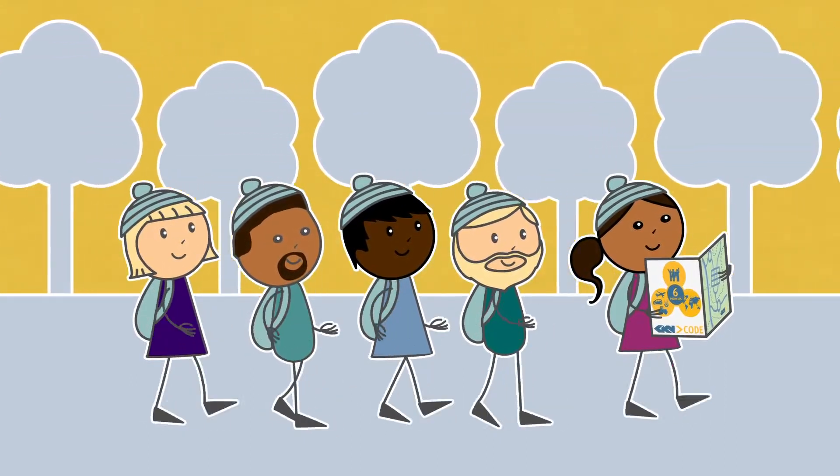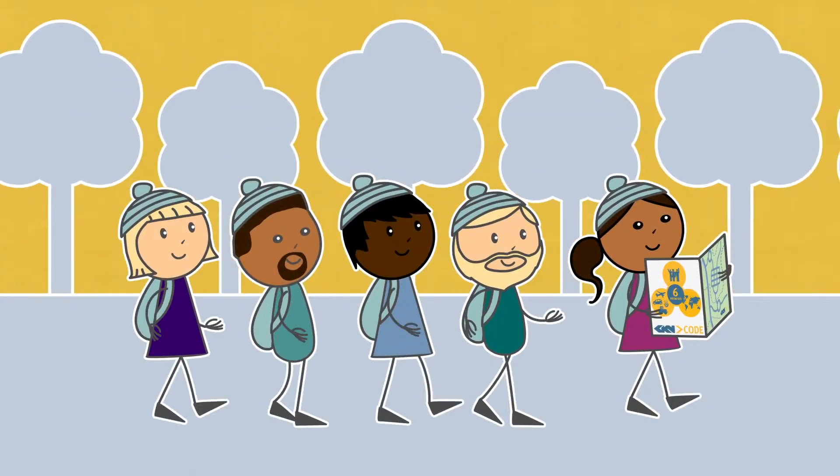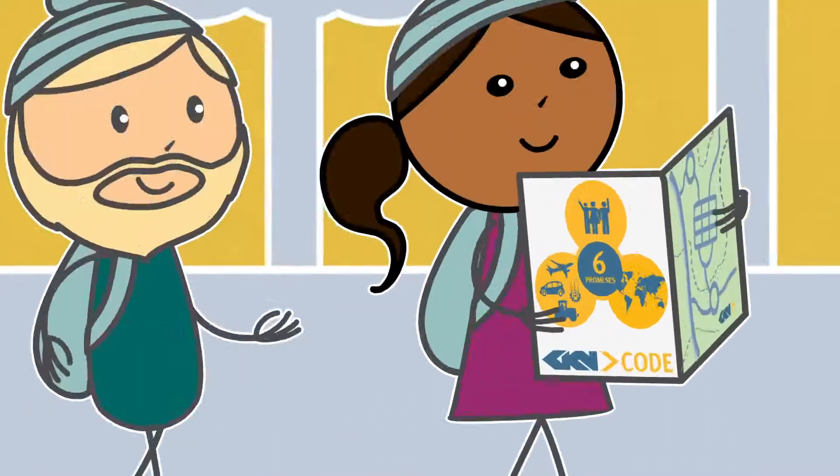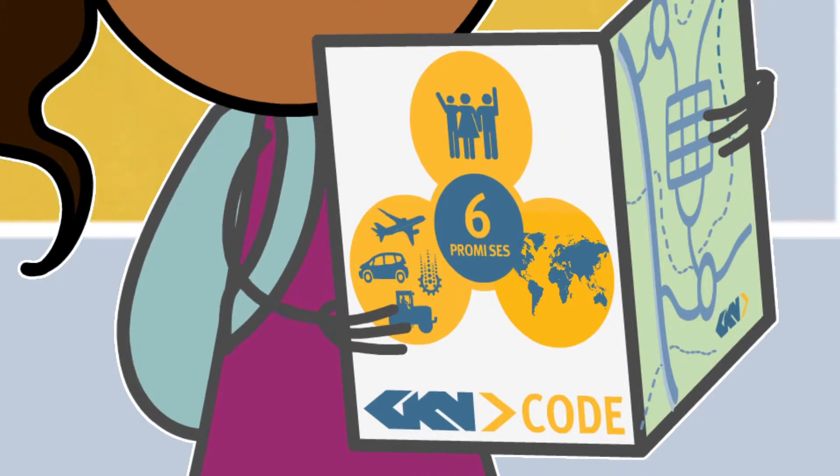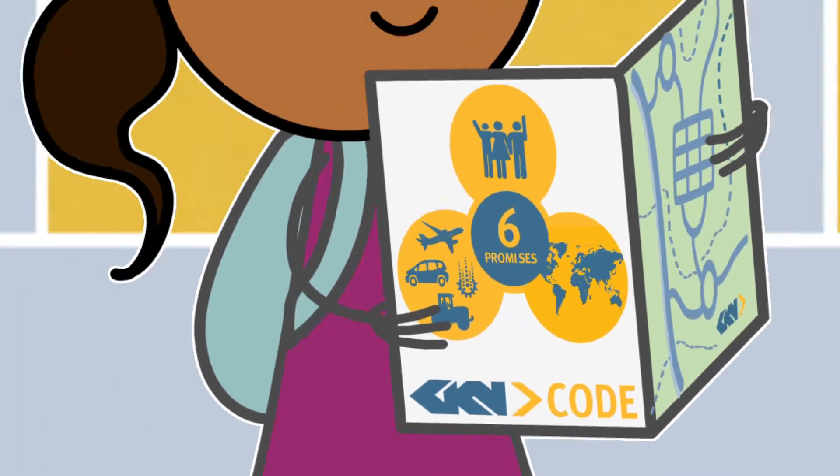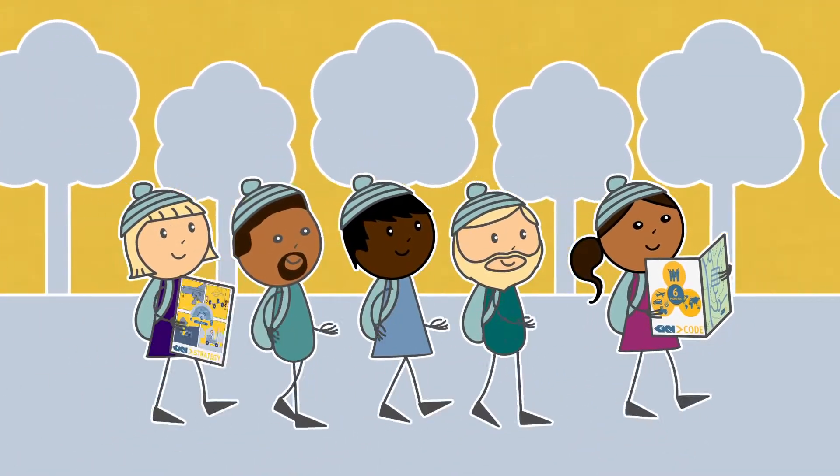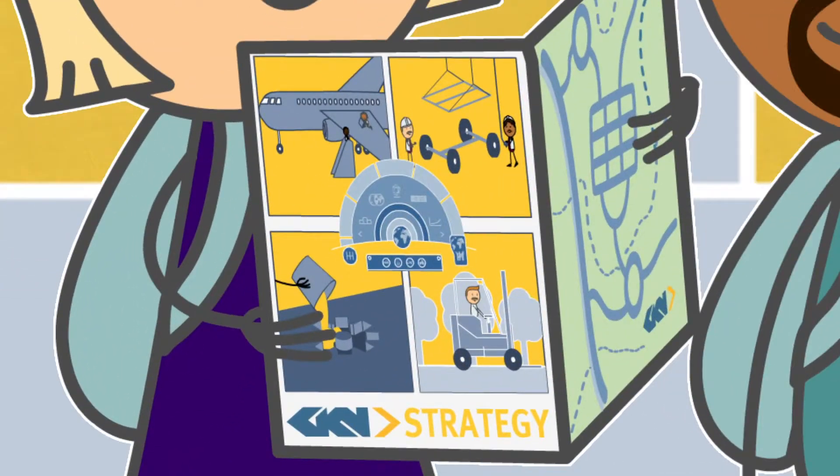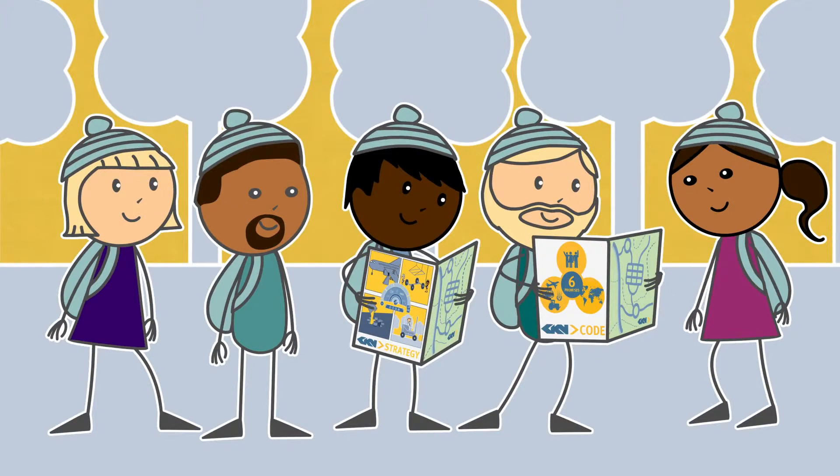To give guidance on how we can all put these promises into action, we have now refreshed the GKN code, making it clearer, simpler, and more engaging for all. If the strategy tells us what the objectives for our business are, the GKN code describes how we should do it.